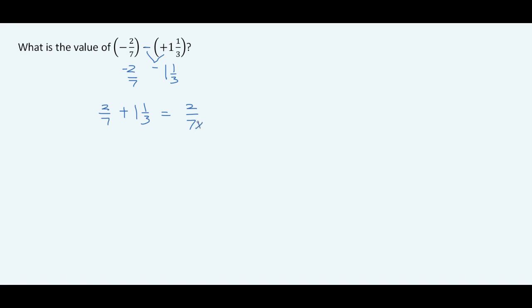For 2/7, we multiply 7 by 3 to get 21, so we multiply 2 by 3 to get 6 over 21. For 1 1/3, we multiply 3 by 7 to get 21, and multiply 1 1 by 7 to get 17 over 21. So we now have 6 over 21 plus 17 over 21, which gives us 6 plus 7 — that's 13 — so we get 13 over 21.